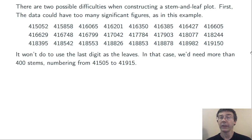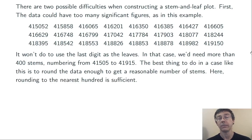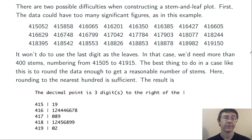Here, we don't want to use the last digit as our leaf. In that case, we'd need more than 400 stems. They'd have to be listed as 415 05 all the way down to 419 15. So that display would just be unwieldy. So the thing to do in a situation like this is just to do a little rounding first, so that you'll get a reasonable number of stems. Here, rounding to the nearest hundred is sufficient.